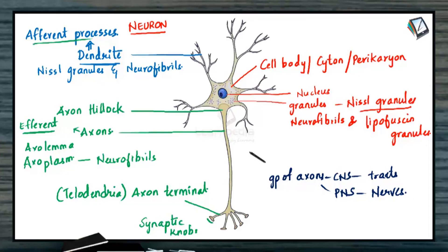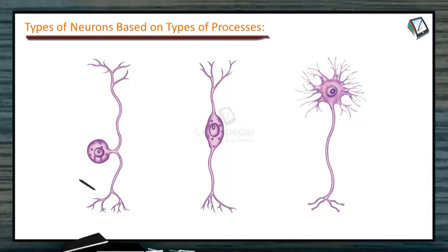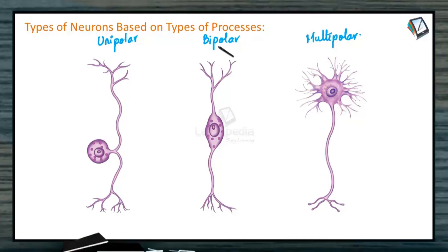Let us now discuss the types of neurons based on their processes. There are three types: unipolar, bipolar, and multipolar. As the name suggests, uni means single, bi means two, and multi means several. Unipolar neurons may be true or false. The true unipolar cells are found in invertebrates, where the cell body produces a single cytoplasmic process.